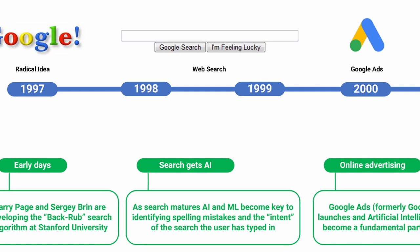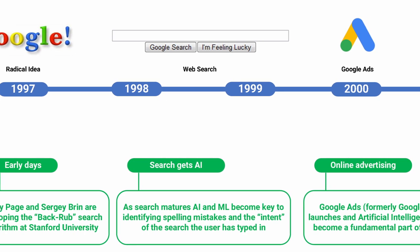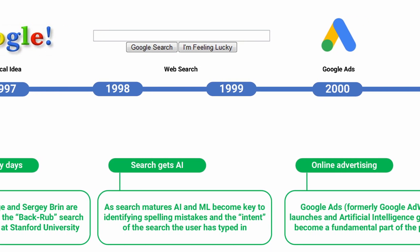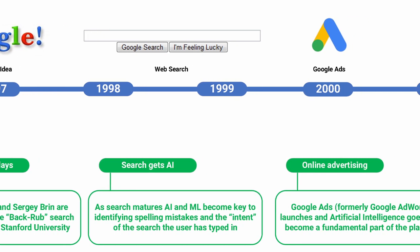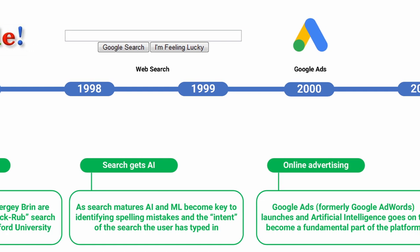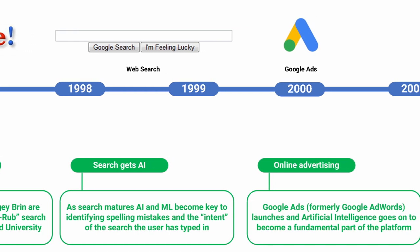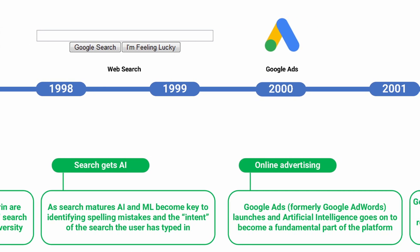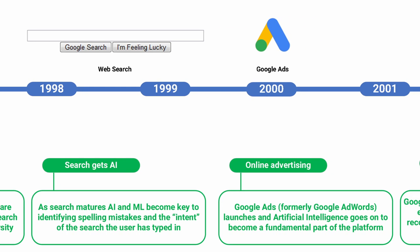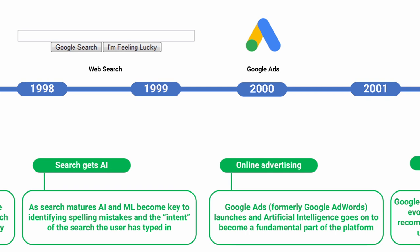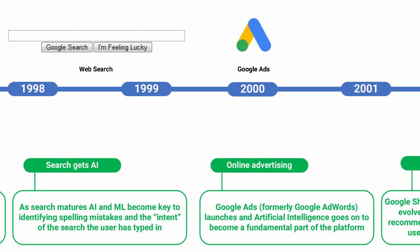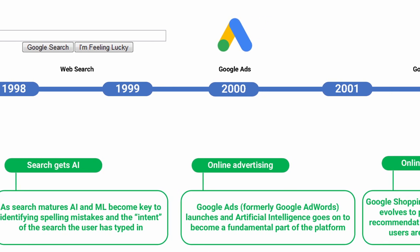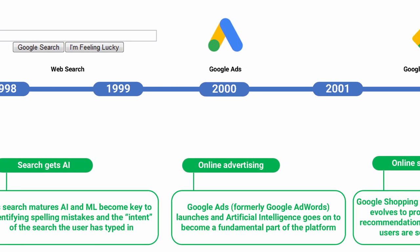As Google Search matured, AI and machine learning became key to identifying things like spelling mistakes and the intent of the search that the user had typed in. For example, if a user typed in 'giant', whether you're looking for giants in fairy tales or New York Giants football scores.